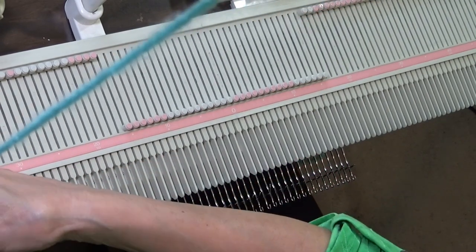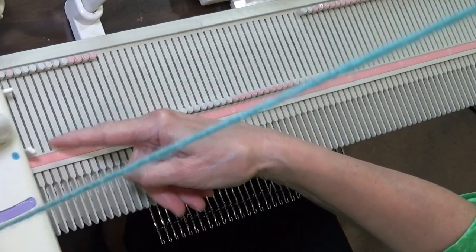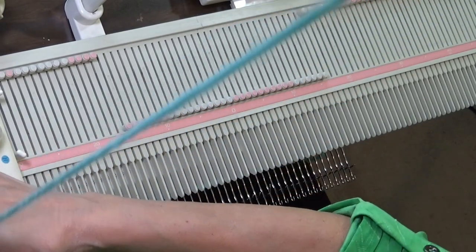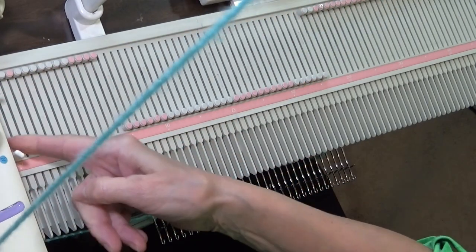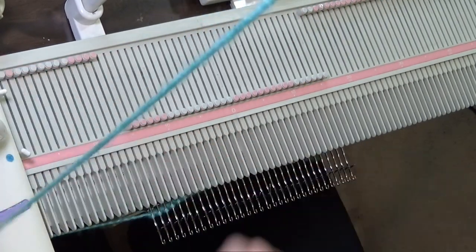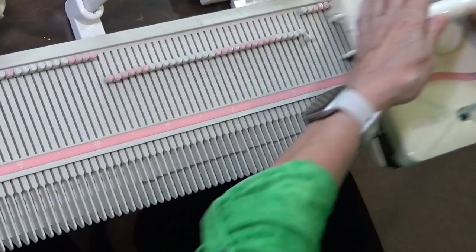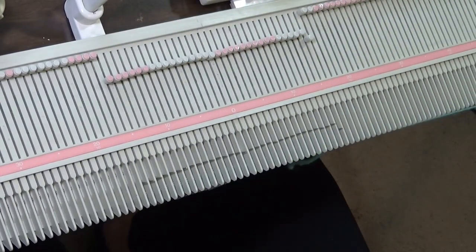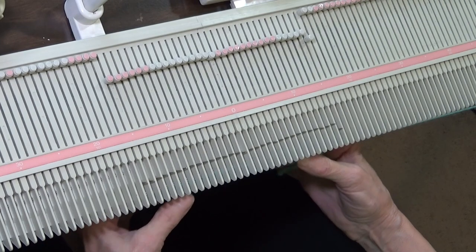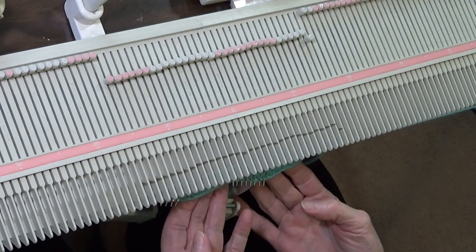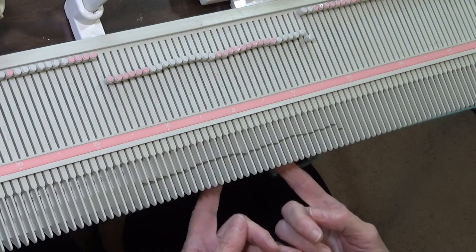This side of the carriage is set to knit. So, we go back to the right. We just did our first row of garter, but you can't see it quite yet.